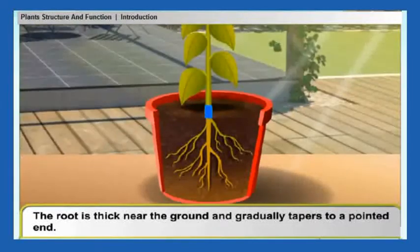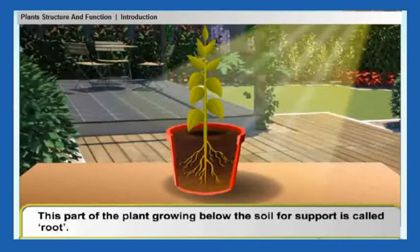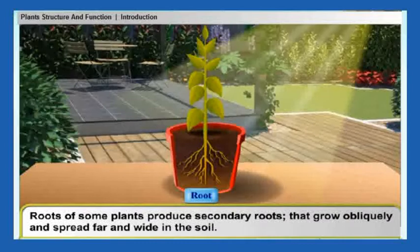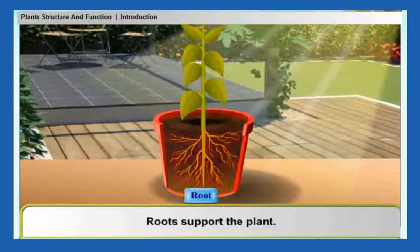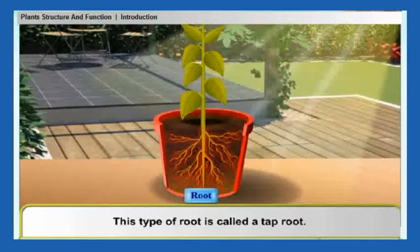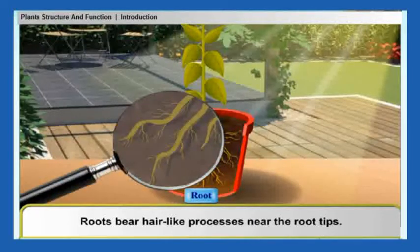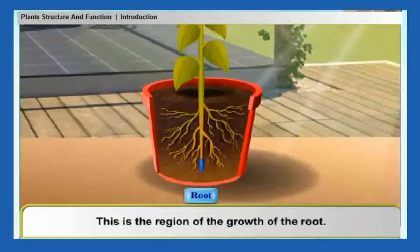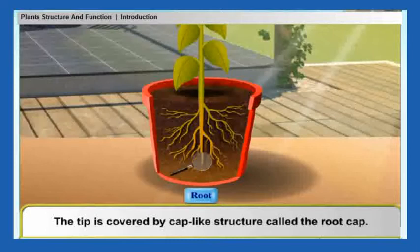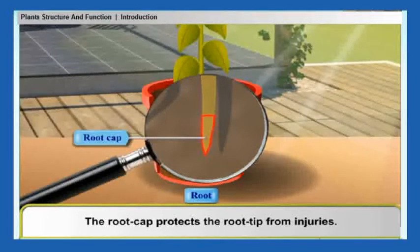The root is thick near the ground and gradually tapers to a pointed end. This part of the plant growing below the soil for support is called the root. Roots of some plants produce secondary roots that grow obliquely and spread far and wide in the soil — this type of root is called a tap root. Roots bear hair-like processes near the root tips, called root hairs. The root tip is delicate and is the region of root growth. The tip is covered by a cap-like structure called the root cap, which protects the root tip from injuries.